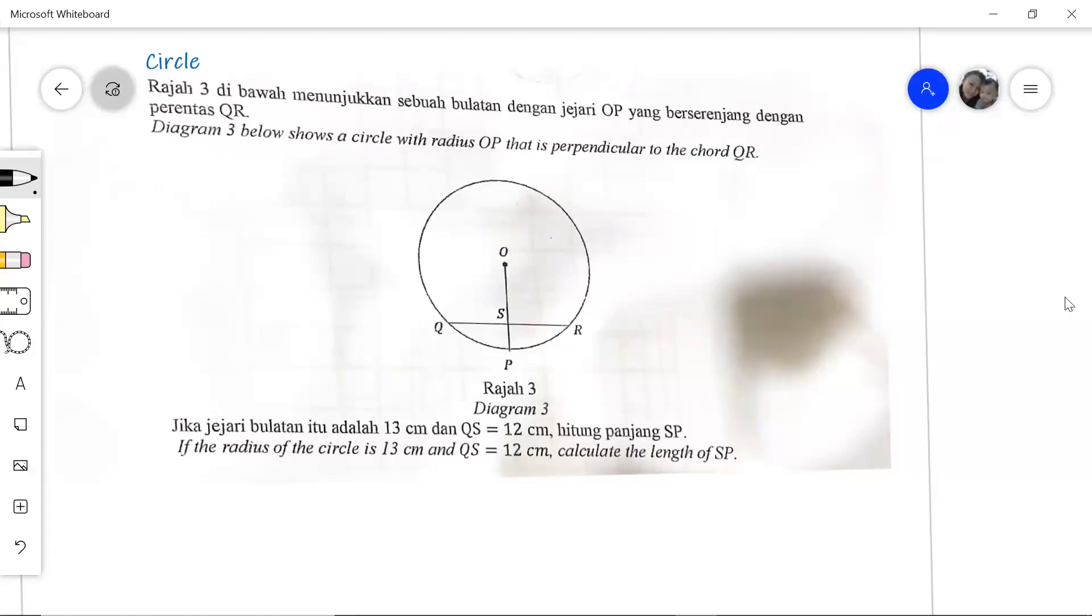Hello everyone, this is the question from form 2 circle. Now diagram 3 shows a circle with radius OP. So OP is the radius and we have the radius perpendicular to the chord given.